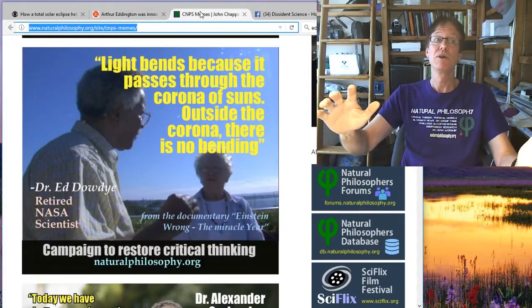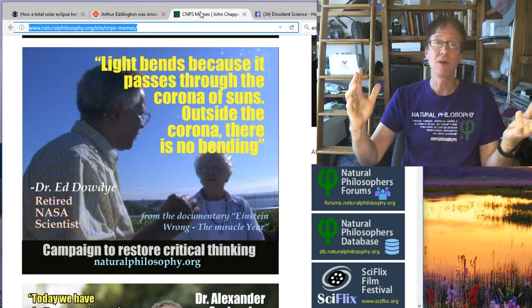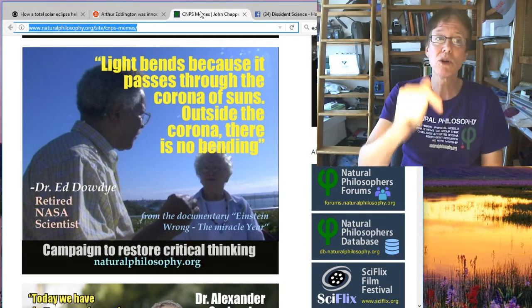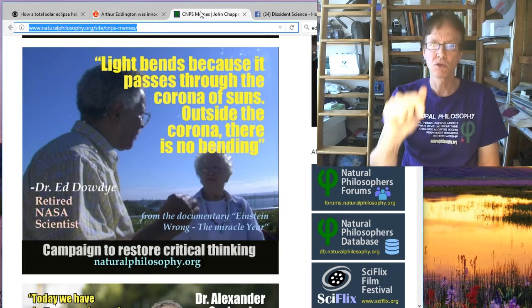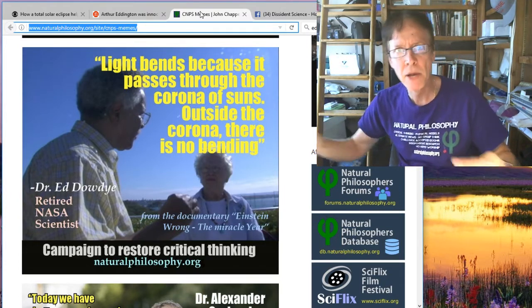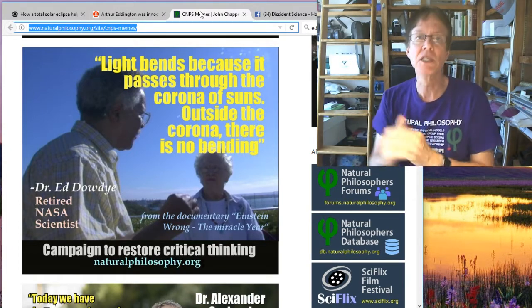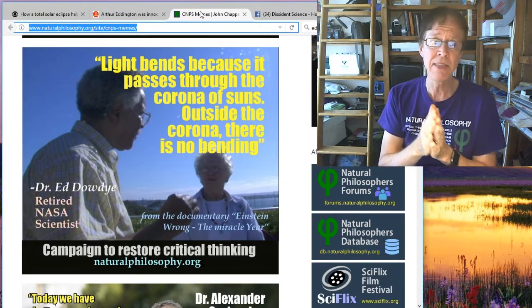But then you have my friend, Dr. Ed Doughty, a very good friend of mine's in my film, Einstein Wrong, who says, light bends because it passes through the corona of suns. Outside the corona, there is no bending. Outside of the corona, there should be, because that's space-time. Space-time is this continuum, and that means that there shouldn't be a place where all of a sudden it stops bending. It should be slowly unbending. But we don't find that. Why?